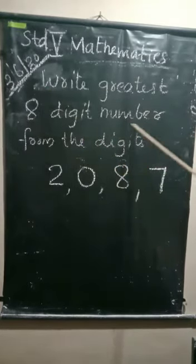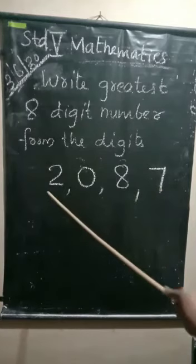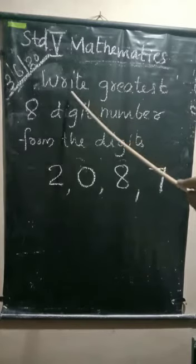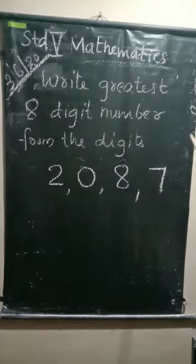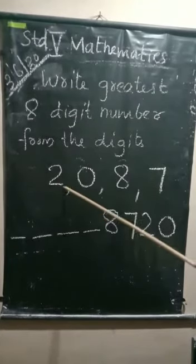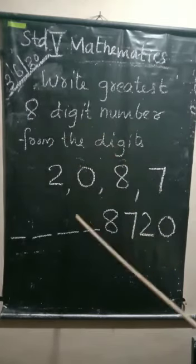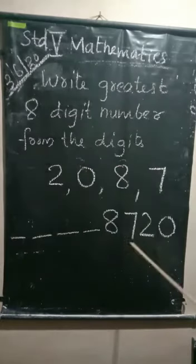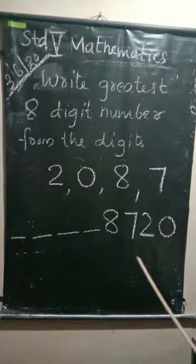Here is another question: write the greatest eight-digit number from the digits 2, 0, 8, and 4. Here only four digits are given, but we are asked to write a greatest eight-digit number. What should we do? First, write these digits in descending order. This is the descending order of the given four digits. We need to write an eight-digit number, so we need four more digits.